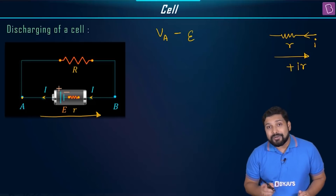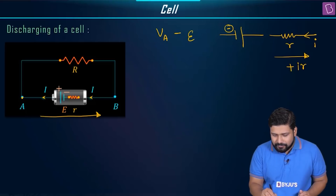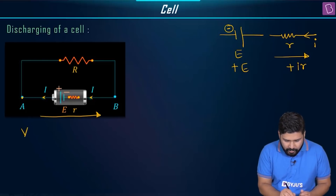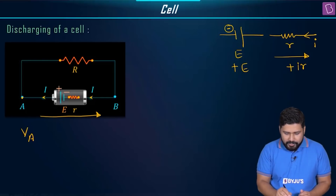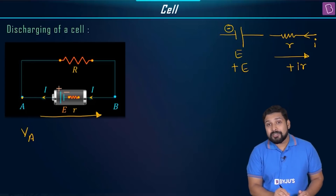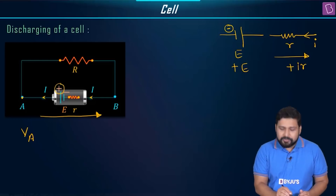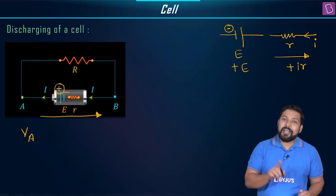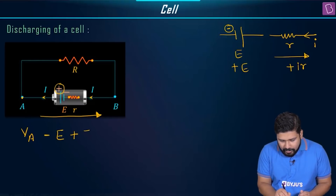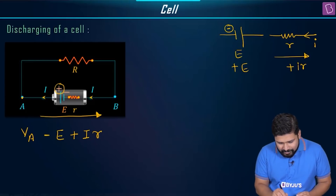For a cell, we look at which terminal we encounter first. If we encounter the negative terminal first and this is E, it should be with a plus sign. Moving from A towards B, I encounter the positive terminal first, which means we are going from higher to lower potential — so I take a negative sign. Therefore: V_A − E + I×r = V_B.